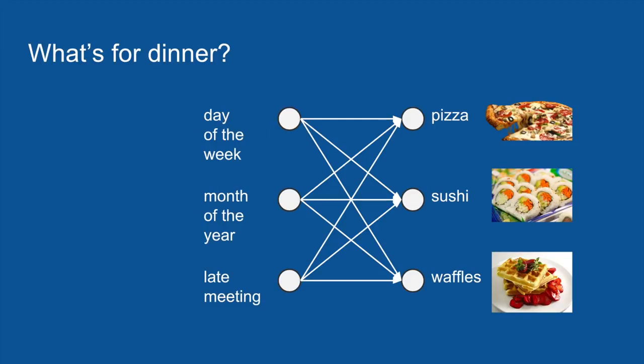In order to predict what you are going to have for dinner, you set up a neural network. The inputs to this neural network are a bunch of items like the day of the week, the month of the year, whether or not your flatmate was in a late meeting. Variables that might reasonably affect what you are going to have for dinner.